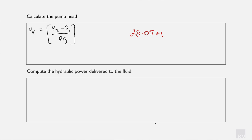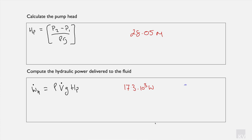Next we calculate the hydraulic power delivered to the fluid. The rate of work involved in developing the head is Ẇ_H = ρ × Q × g × H_P, which equals 17.3 × 10³ watts. Recall that Q equals V-dot — both notations represent the volumetric flow rate.